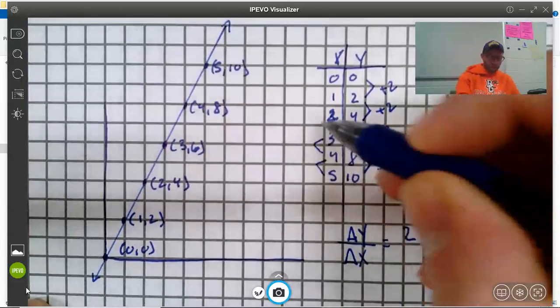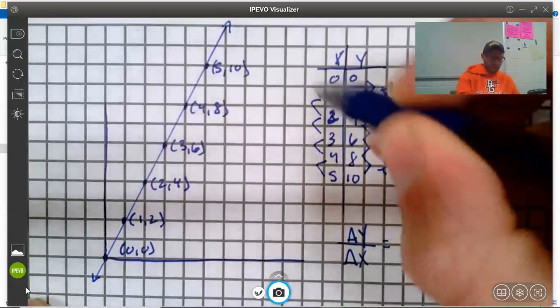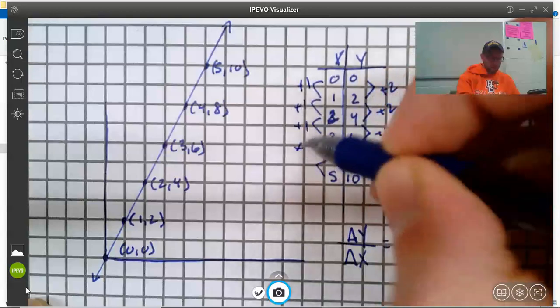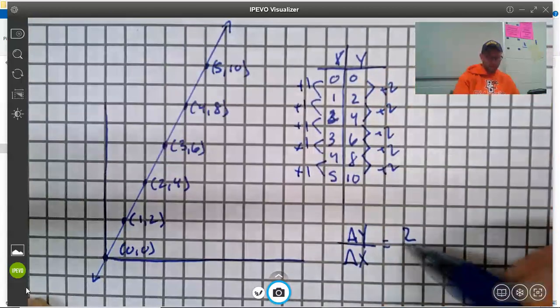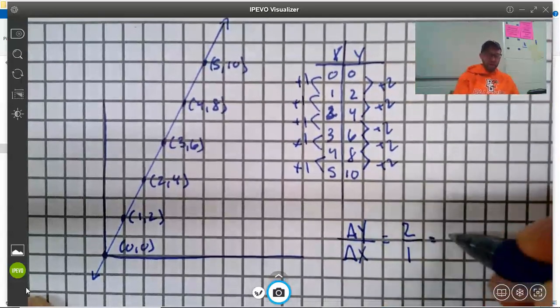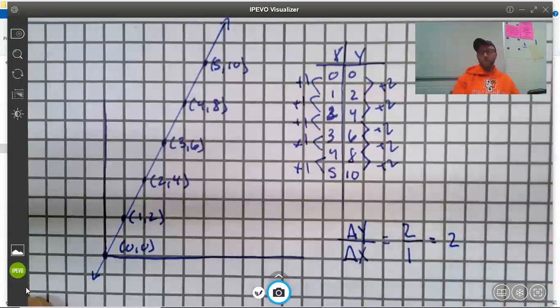So that is change in y is 2. And it is plus 1 on the x side. So our change in x is 1. And we could simplify this, by the way, to just 2. And we would call that slope.